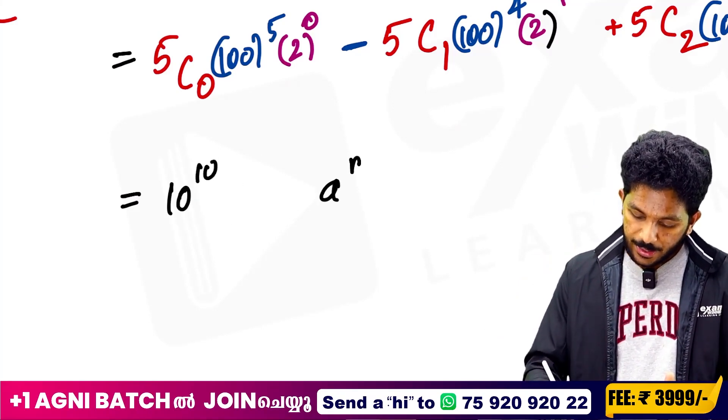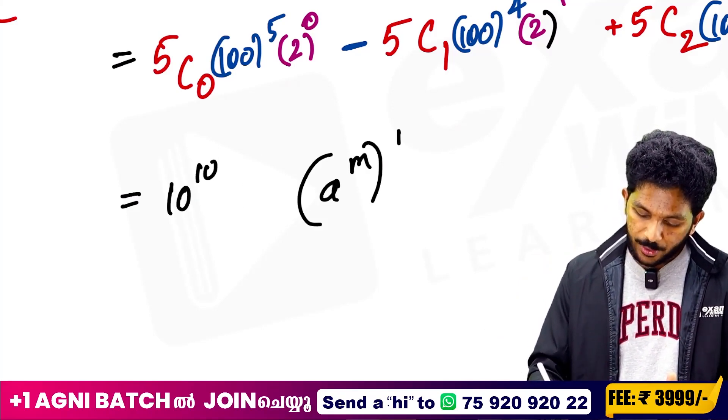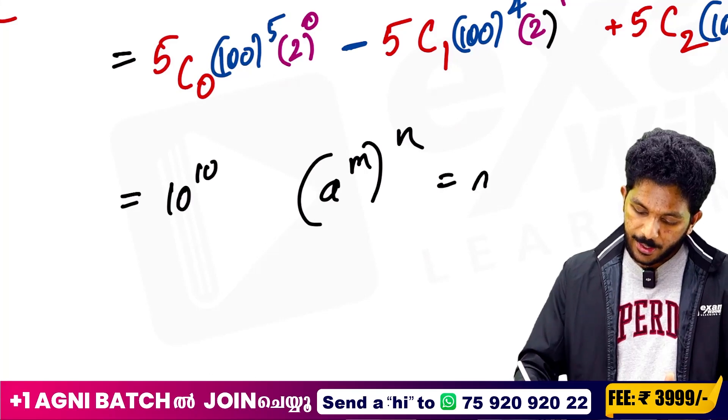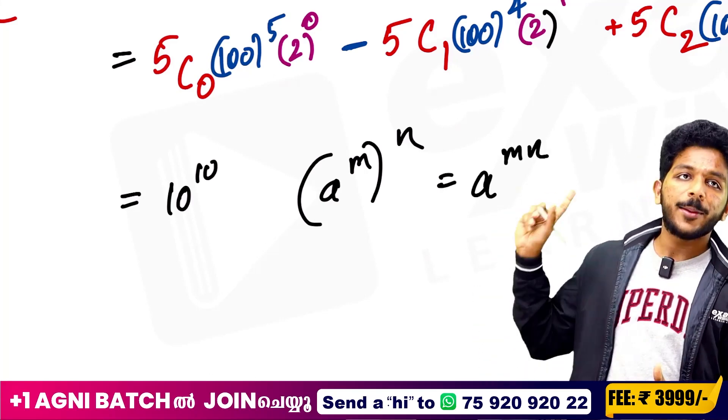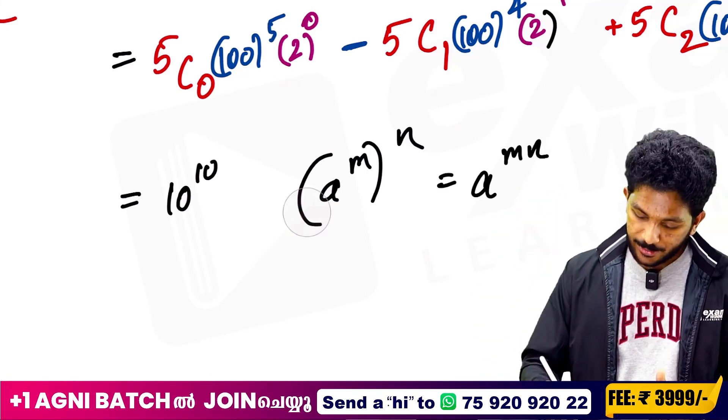The rule is: a raised to m, whole raised to n, equals a raised to m times n. That's right. So we get 10 raised to 10.